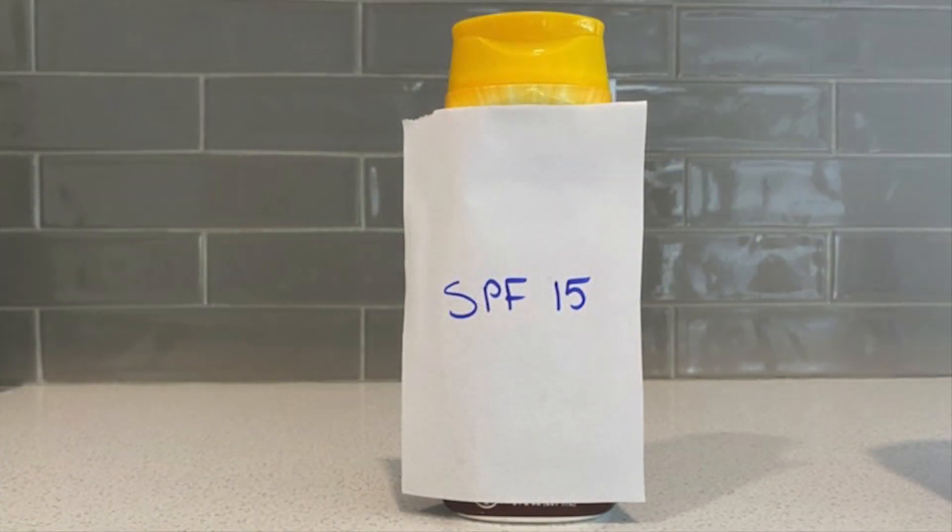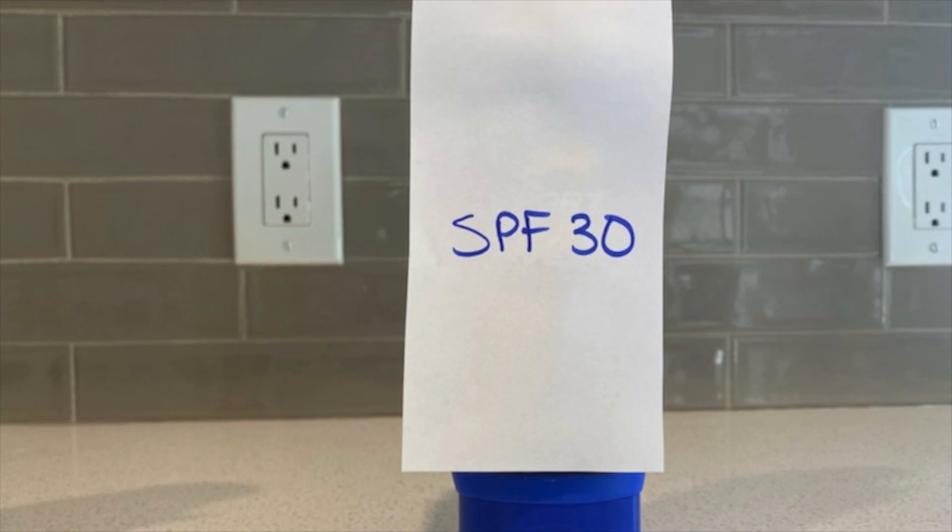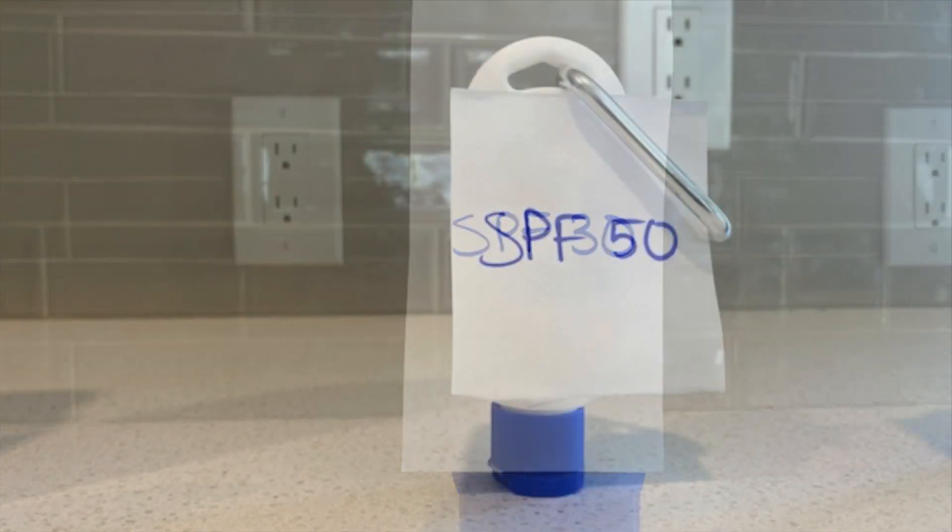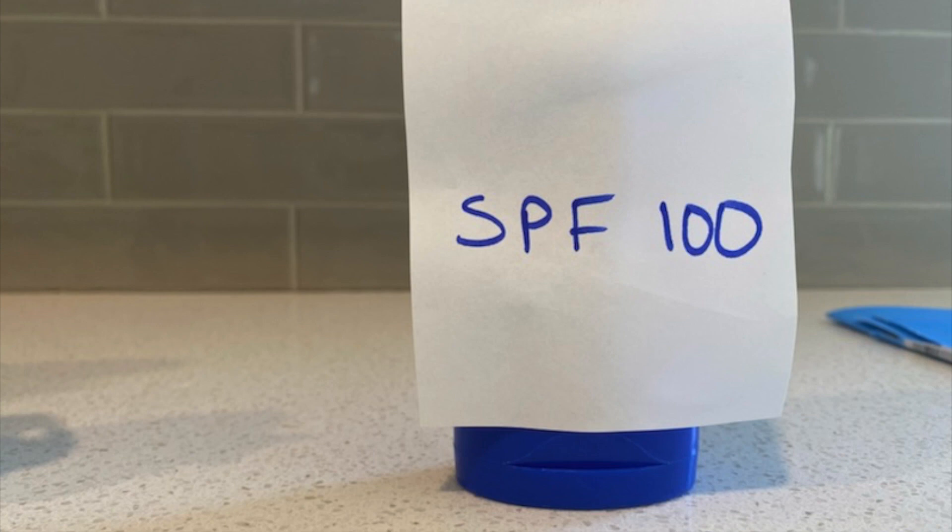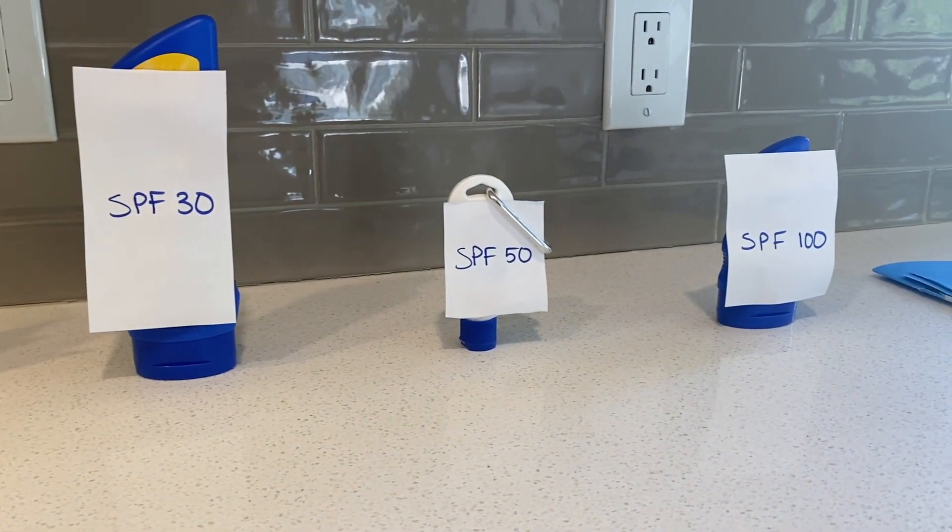To simulate the power of sunscreen, we're going to use paper which will bleach in the sun. The goal of this experiment is to see how effective different SPF sunscreens are and to see what happens to our control, which will have no sunscreen.